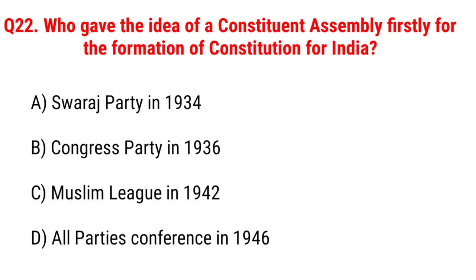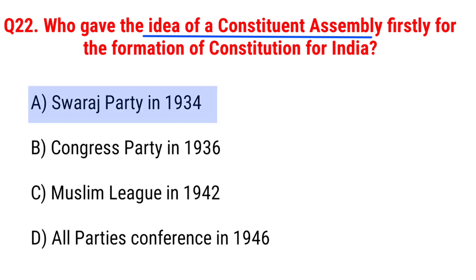Next question: who gave the idea of a Constituent Assembly firstly for the formation of a Constitution for India? It's a very important question. Option A, Swaraj Party in 1934; B, Congress Party in 1936; C, Muslim League in 1942; D, All Parties Conference in 1946. The right answer is Option A, Swaraj Party in 1934.